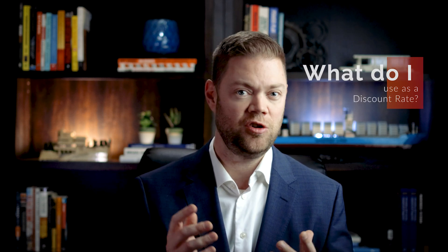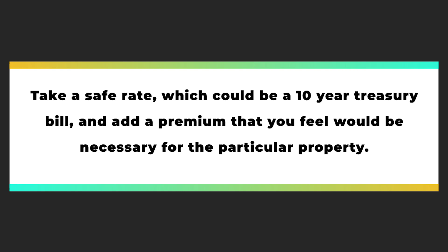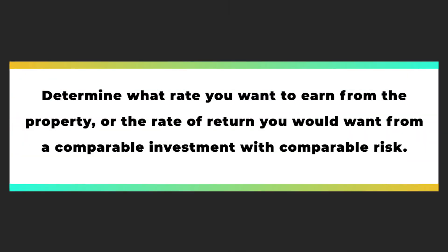One major question that might be percolating for you: what do you use as a discount rate? I've seen numerous formulas on how to calculate the rate, but some of these run the risk of being too academic to be useful in actual practice. So without overcomplicating it, here are two simple methods. First, take a safe rate — which could be a 10-year treasury bill or anything else you deem appropriate — and add a premium you feel is necessary for the particular property. An older property with unstable income might need a higher premium, whereas a great property with a strong tenant might need less. Second, simply determine what rate you want to earn from the property — the rate of return you would want from a comparable investment with similar types of risks. If you expect a 10% compounded yearly return, use 10% as your discount rate.